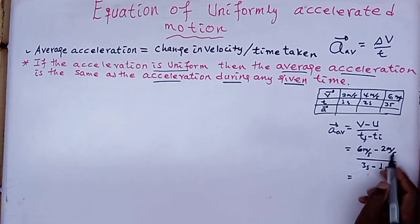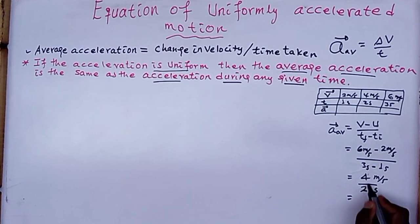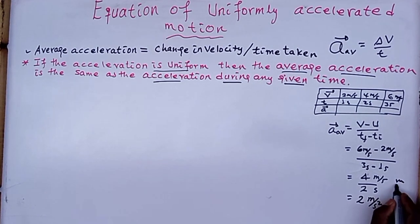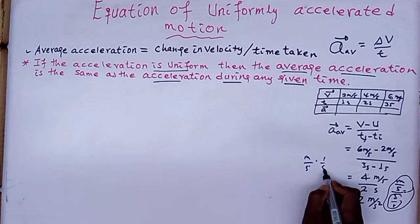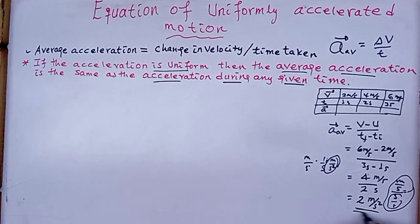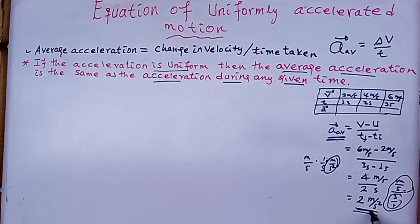For example, two seconds: meter per second squared times two seconds gives meter per second. The units work out: meter per second squared times seconds equals meter per second. The average acceleration is two meter per second squared.